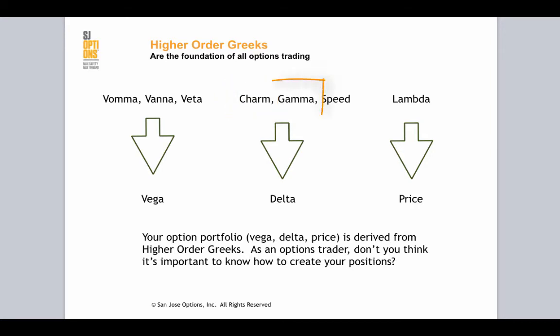Gamma: most people are aware of Gamma, which is why I don't understand why the industry is not aware of Vama, Vana, and things. But your Gamma — again — it's crucial to understand how to control that Gamma, because your delta is changing as the underlying product moves around left and right according to that Gamma position.